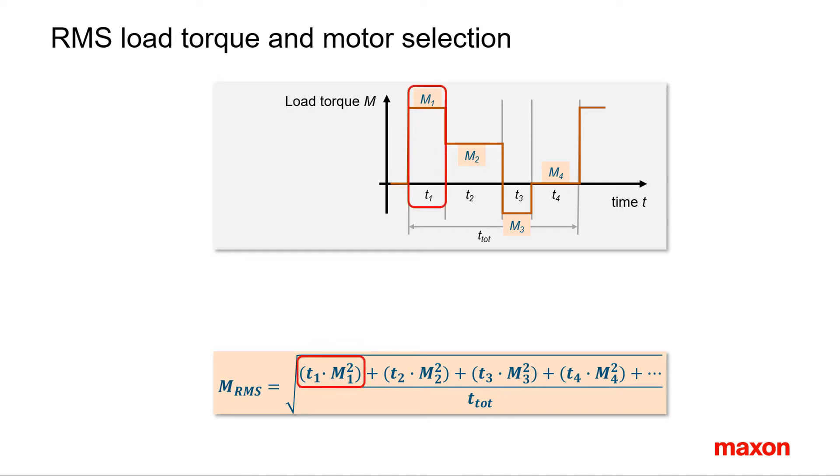Multiply the duration of phase 1 with the square of the torque in phase 1. Repeat this procedure for all the operation phases and sum up all the values. Then divide this sum by the total time of the operation cycle including dwell. At the end, calculate the square root from this result.